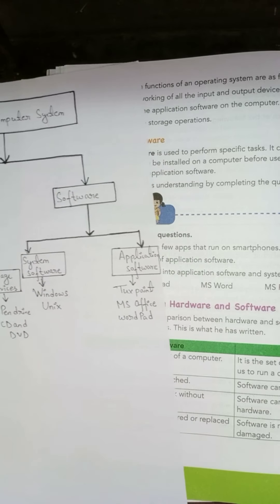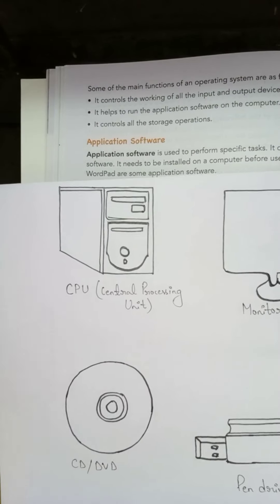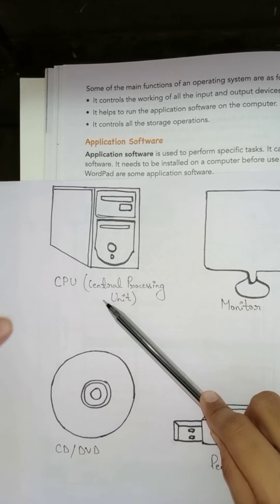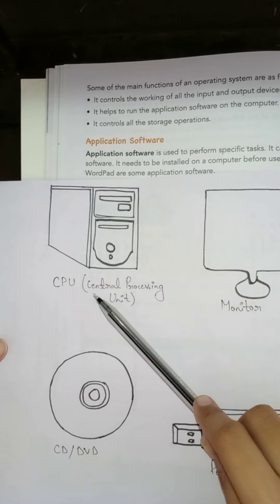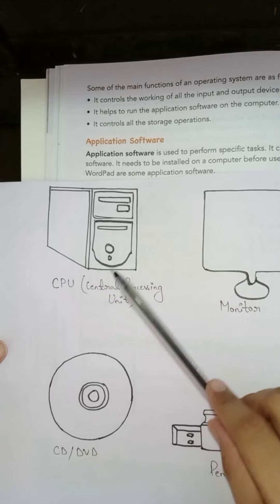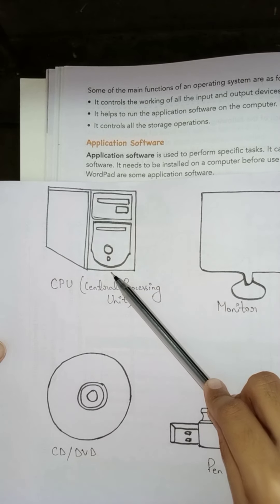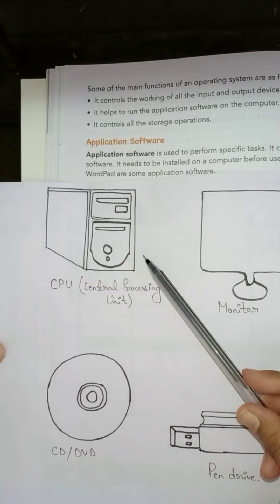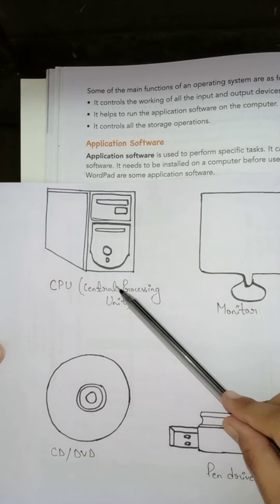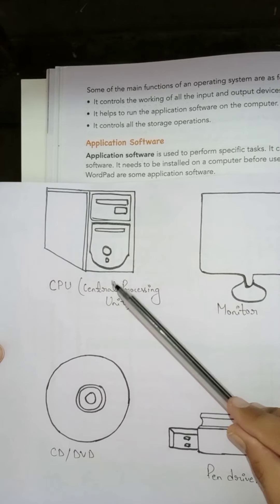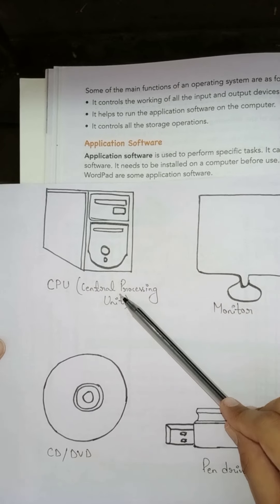Now let's learn about the figures. The first figure is the CPU. What does the CPU do? It takes input and transfers it to output. CPU is a processing device, or processing unit.